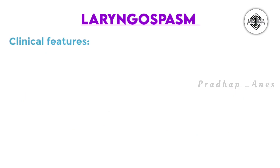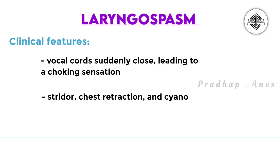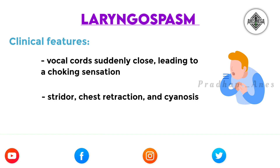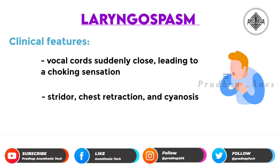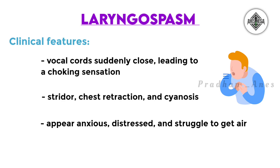Clinical Features: During laryngospasm, the vocal cords suddenly close, leading to a choking sensation and difficulty in breathing. It may result in stridor — meaning high-pitched breathing sounds — chest retraction, and cyanosis, which is bluish discoloration of skin. Patients may appear anxious, distressed, and struggle to get air.